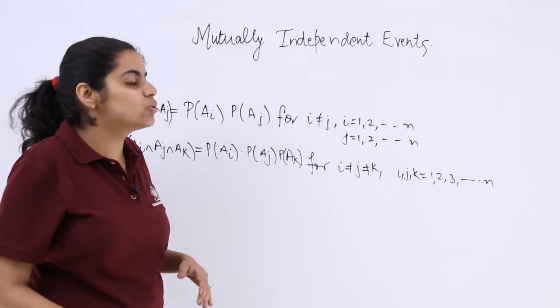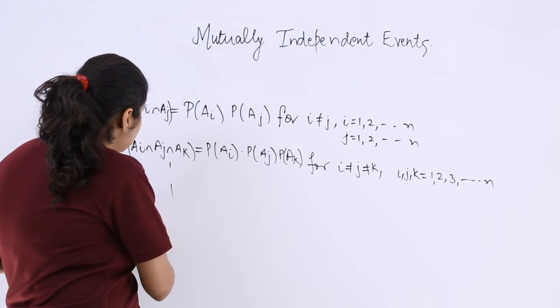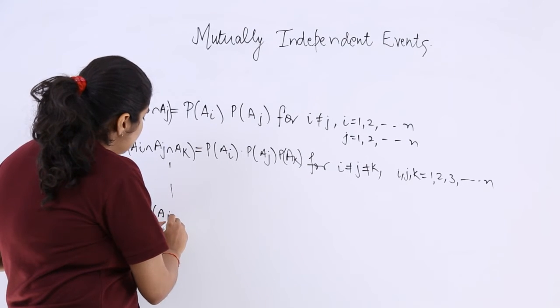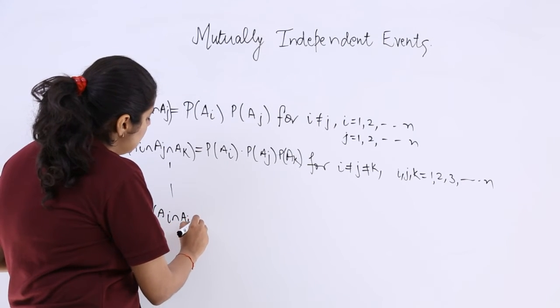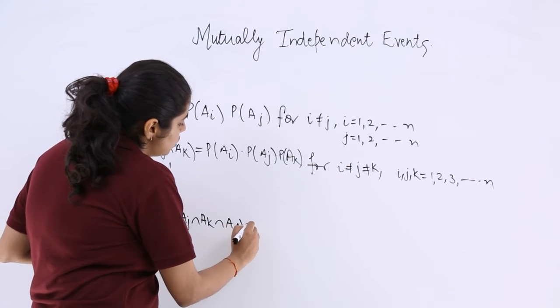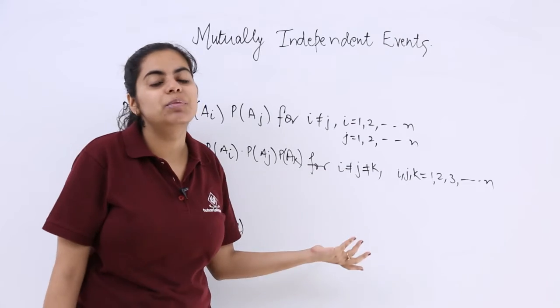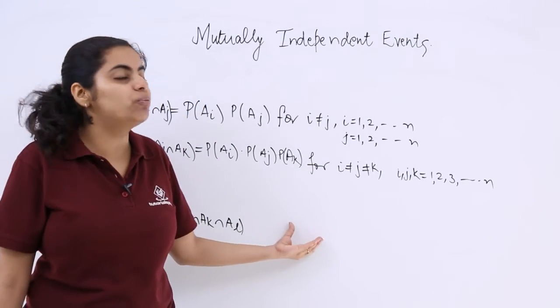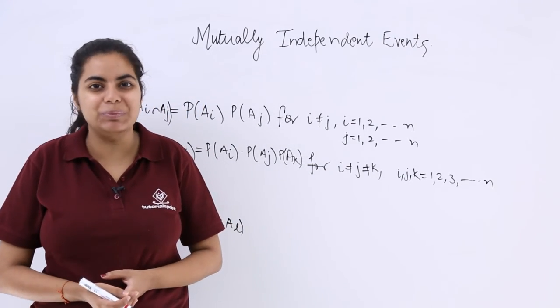Now you understand in case of mutually independent events, I can even extend it to A_i intersection A_j intersection A_k intersection A_l and so on. Here also the simultaneous occurrence is there, so there will be the product of individual probabilities.